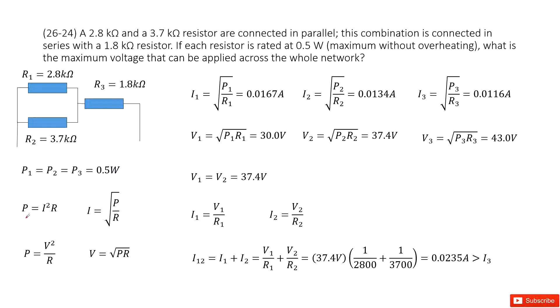As we see the power P equals I squared times R, so I equals square root of P over R. And P equals V squared divided by R, so V equals square root of PR.